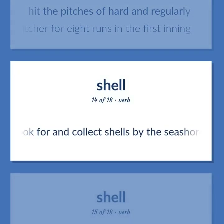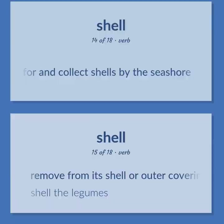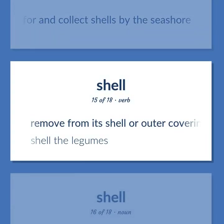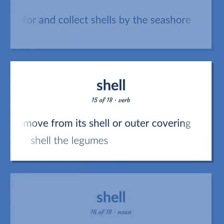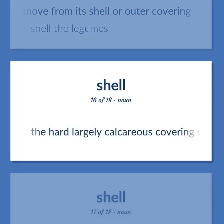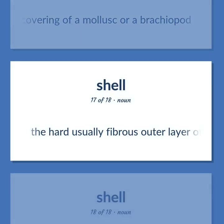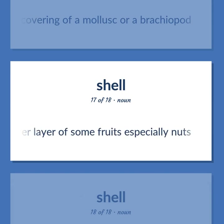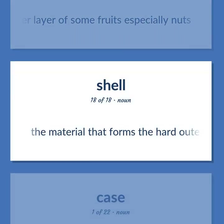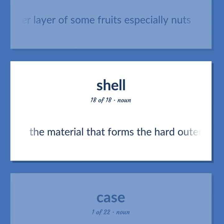Shell: Look for and collect shells by the seashore. Remove from its shell or outer covering — shell the legumes. The hard largely calcareous covering of a mollusk or a brachiopod. The hard usually fibrous outer layer of some fruits, especially nuts. The material that forms the hard outer covering of many animals.